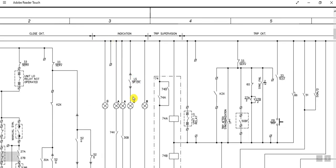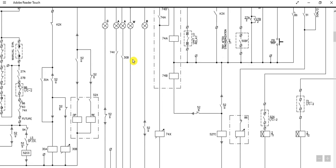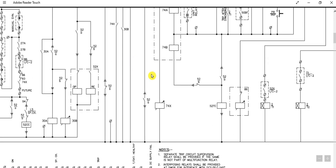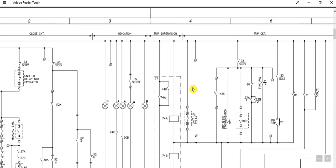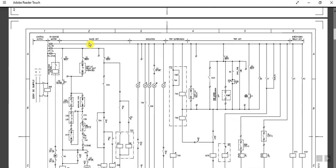These are the indicating LED lamps which are mounted on the flush-mounted panel door outside. These are the circuits for the closing circuit, circuit breaker closing indication circuit, trip circuit supervision, and trip circuit.